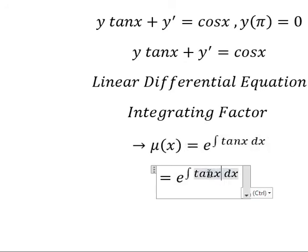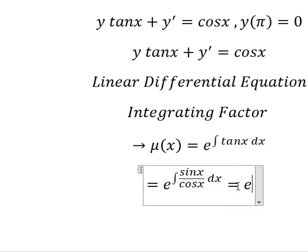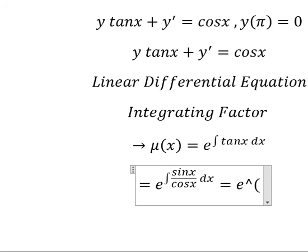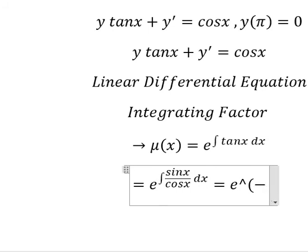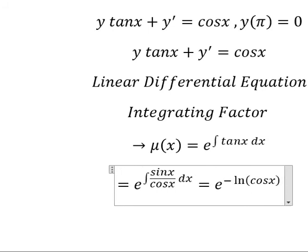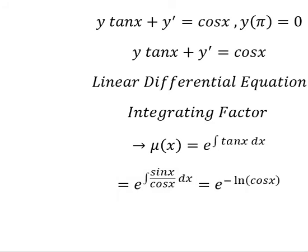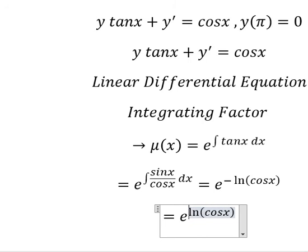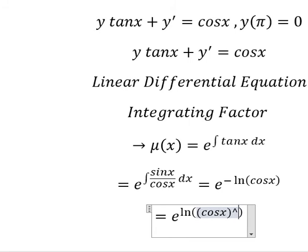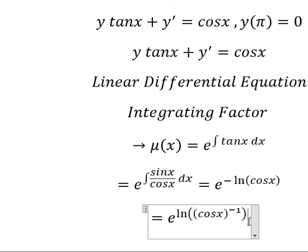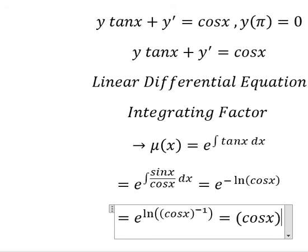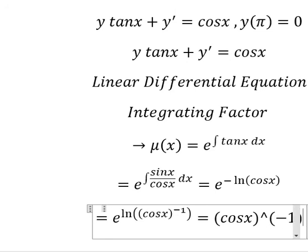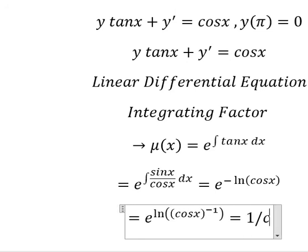We change tan(x) to sin(x) over cos(x). The integration of this gives us negative ln of cos(x). The negative goes inside the natural log, so we have cosine(x) to the power of negative one, which we can also write as one over cosine(x).